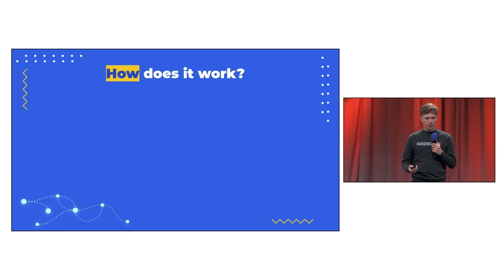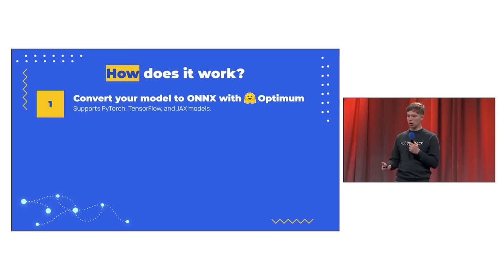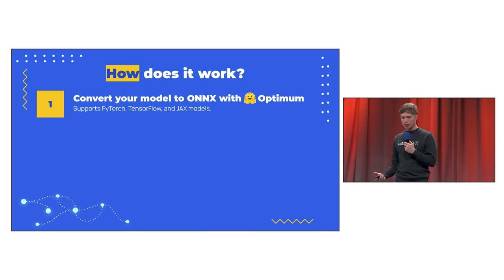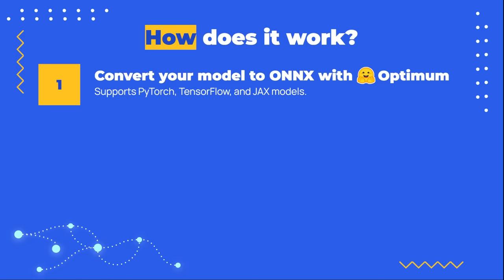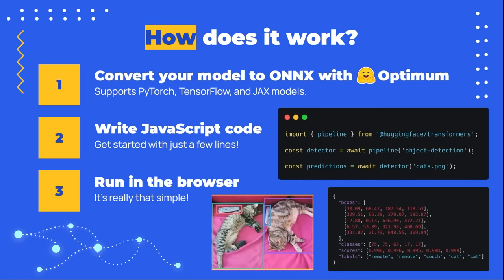So how does it work? First, users convert their PyTorch, TensorFlow, or JAX models to ONNX using our Optimum library. Of course, if a user wants to use one of the already converted models, they can skip that step and use the model ID from the Hugging Face Hub. Next, the user writes their JavaScript code. We recommend that new users utilize the pipeline function, which provides a high-level, easy-to-use API that encapsulates preprocessing, inference, and post-processing. For advanced users, we expose the model, tokenizer, and processor classes, as well as other relevant functions. And finally, a user can open up their web browser and run their application. It's really that simple.